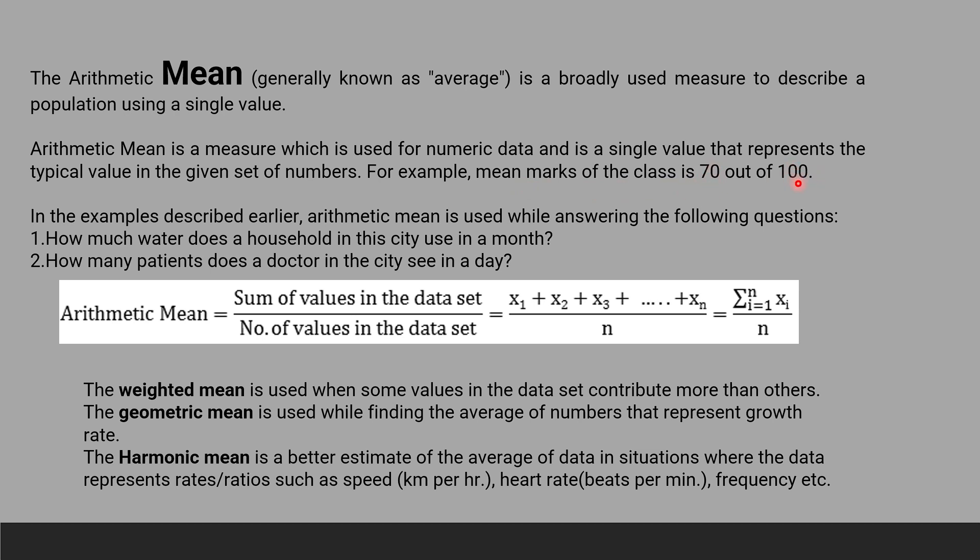Here are some examples you can read, and the formula of arithmetic mean is sum of values in the data set divided by the number of values. That is x₁ + x₂ + x₃ + x₄ + x₅ up to xₙ divided by n.